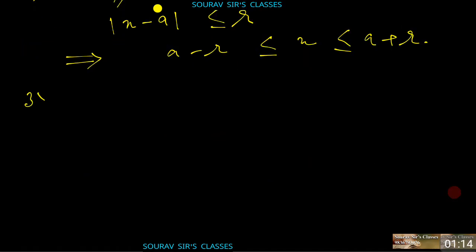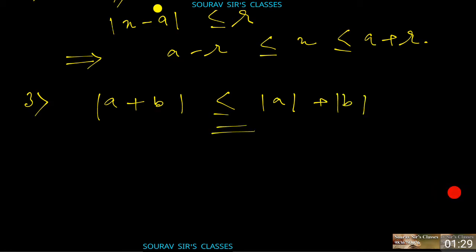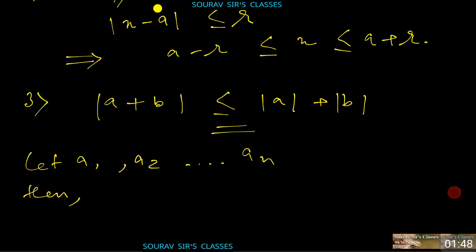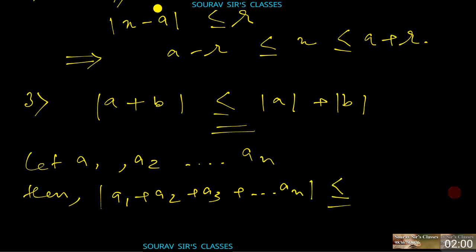Trick number three: if A and B are two numbers, then |A + B| ≤ |A| + |B|. This is always true and very important. Moreover, the general form for n numbers is: |A1 + A2 + ... + An| ≤ |A1| + |A2| + ... + |An|.